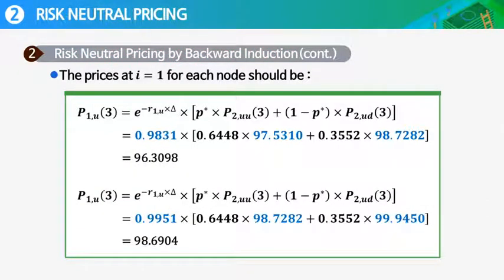Now, the prices at t equals 1, or six months later, for each node should be calculated. We have two scenarios: prices go up or down. So P_{1u}(3) is calculated by discounting, and then we have two bond prices here going up or down. We multiply by risk-neutral probabilities to get 96.3098. Then we can calculate bond price similarly for the other node, getting 98.6904.